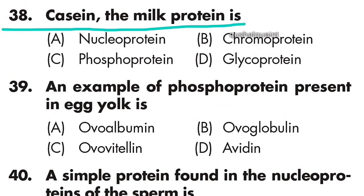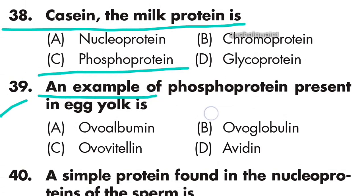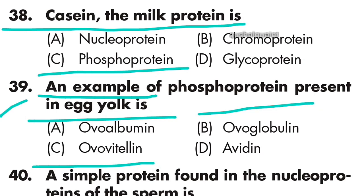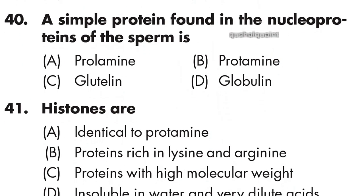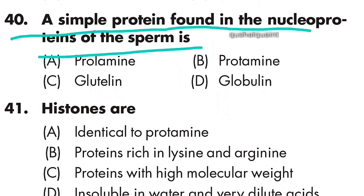Question 38: The milk protein is casein; it is a phosphoprotein — option C is right. Question 39: An example of a phosphoprotein present in egg yolk is — option C is right — ovovitellin. Question 40: A simple protein found in the nucleoprotein of sperm is protamine — option B is right.